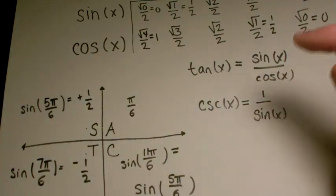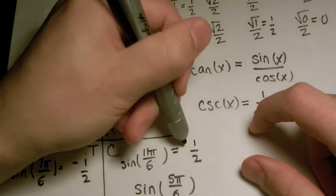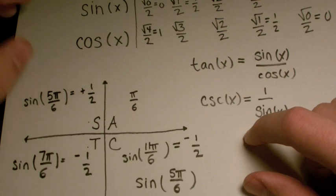So, sine of 11π/6, that's going to be absolute value 1/2. And will it be positive or negative? It will be negative. Because only cotangent and secant are positive in quadrant 4.